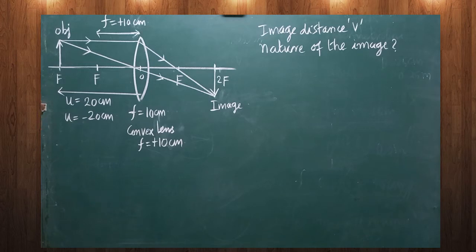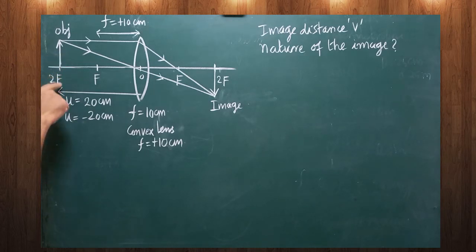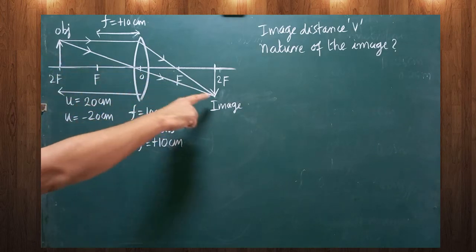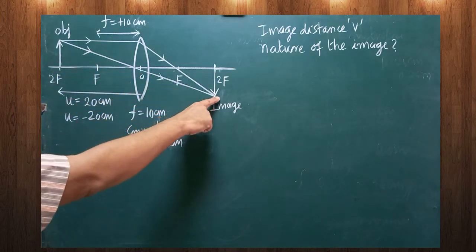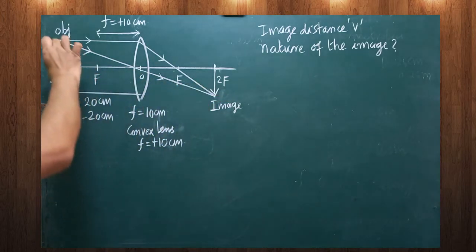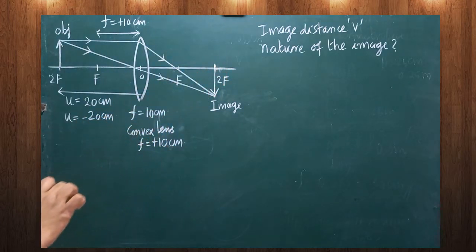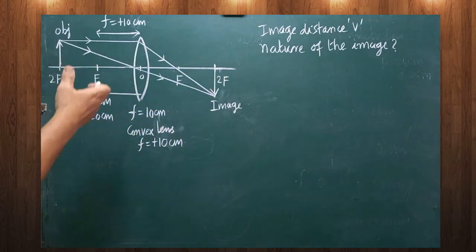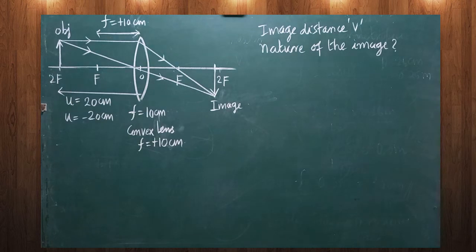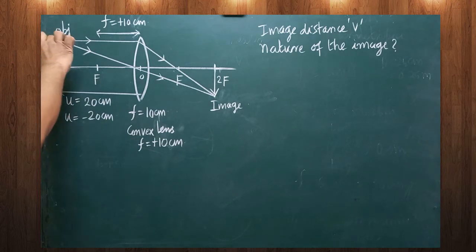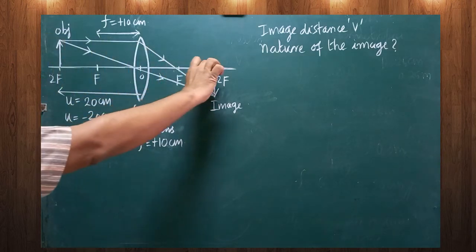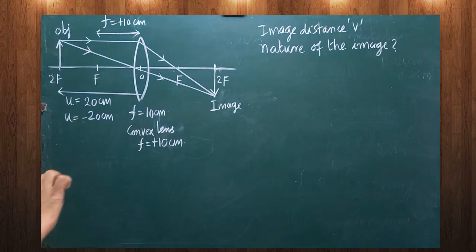From the ray diagram, if any object is kept exactly at 2f, the image is formed exactly at 2f on the other side. Both the object distance and image distance will be the same. If you draw the ray diagram you can understand this clearly. So the object distance and image distance will be similar.